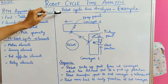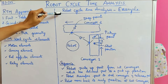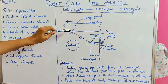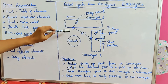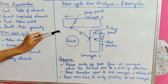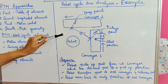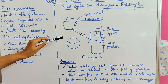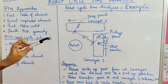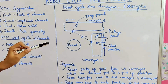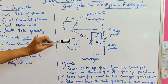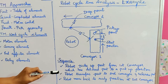Now we will see an example in robot cycle time analysis. Consider this picture. The work cycle of the robot consists of a simple task in which the robot must move parts weighing 3 lb from one conveyor to the other conveyor.